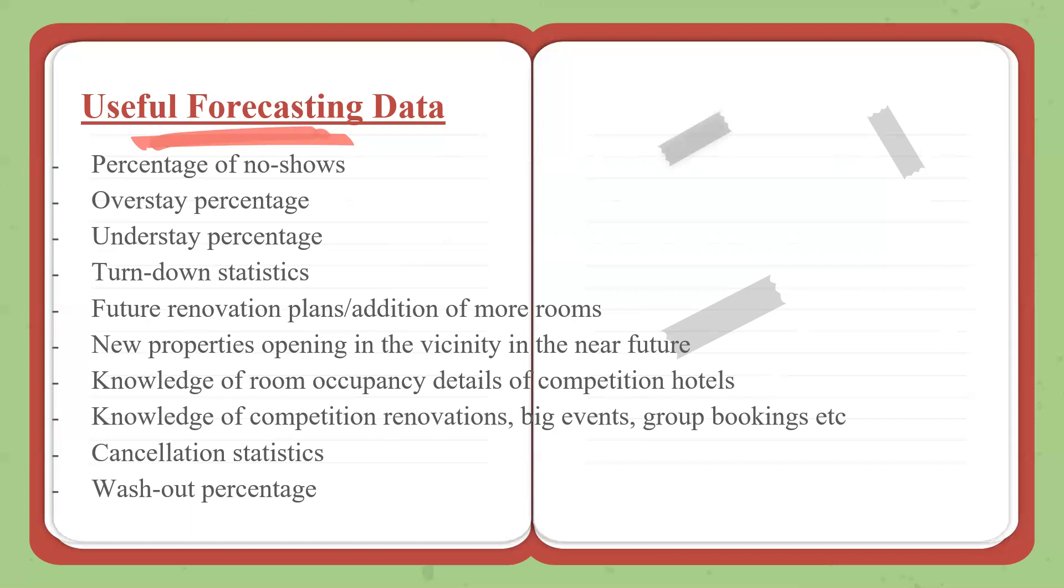You don't have to give 100% in detail accurate data, but you can give a ballpark, which is still good for them for projection. Knowledge of competition renovations, big events, group bookings. So if I know a huge convention is happening at another competition hotel and that convention is booked 150 out of the 200 rooms, I know a lot of their surplus bookings are going to come to me.